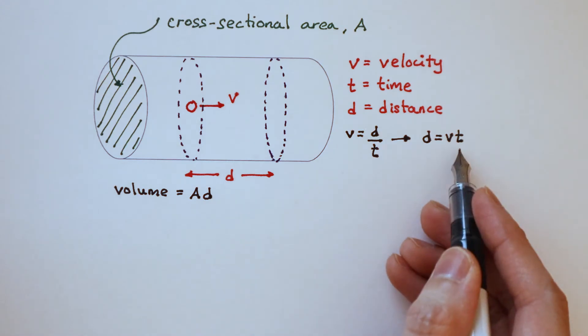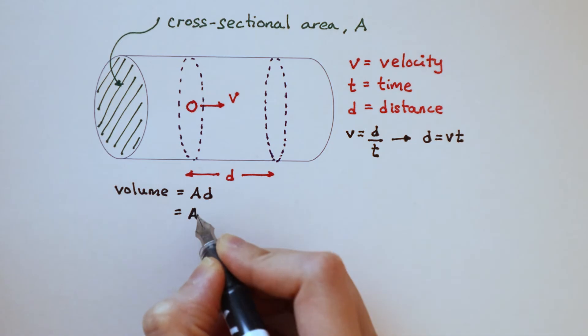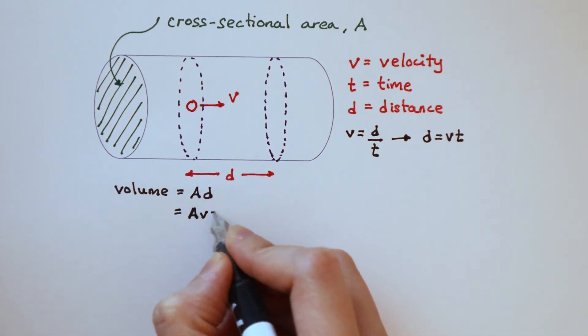But d is equal to vt. So substitute this into here to get volume is Avt.